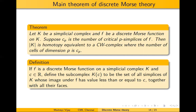To prove this theorem we need a couple more definitions. We define K(c): given a discrete Morse function f on K and a value c in R, K(c) is the sub-complex consisting of all simplices whose f-value is at most c, together with all their faces. Note that not all simplices in K(c) necessarily have f-value ≤ c, since they may be faces of something whose value is ≤ c.